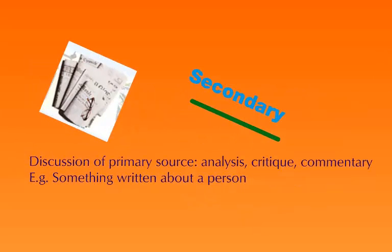So what would be a secondary source? This is going to be a discussion of a primary source — an analysis, a critique, a commentary about something, something written about someone. So if I write something about Maya Angelou, that's a secondary source about her. What she's written about herself is a primary source. If you read something in the newspaper about a study that happened, the newspaper isn't the primary source about that study — they're reporting news about something else that happened. So they're a secondary source. You need to think: do I need a primary source or a secondary source?